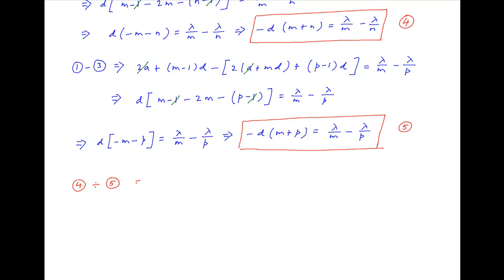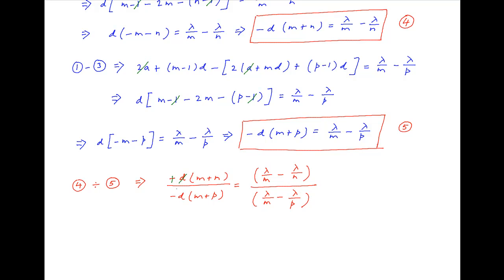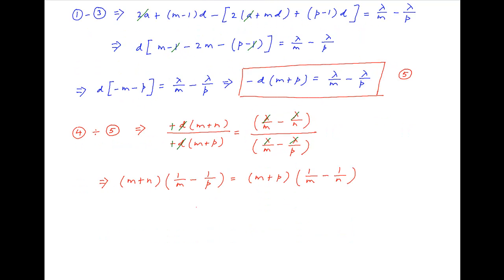Now equation 4 divided by equation 5 implies: minus d times m plus n divided by minus d times m plus p equals lambda upon m minus lambda upon n divided by lambda upon m minus lambda upon p. Minus d cancels on the left-hand side and lambda cancels on the right-hand side. Cross multiplying, we get m plus n times 1 upon m minus 1 upon p equals m plus p times 1 upon m minus 1 upon n, which is the required result.